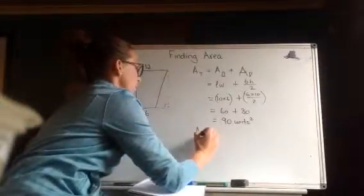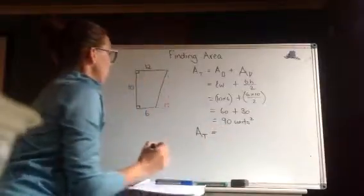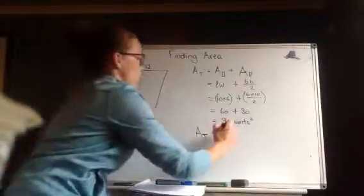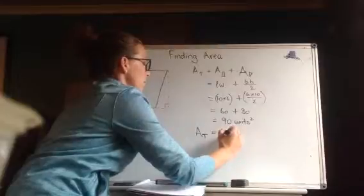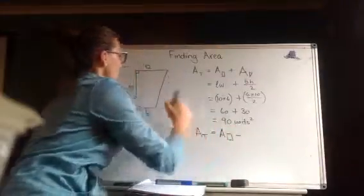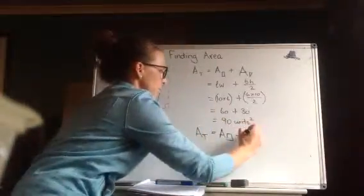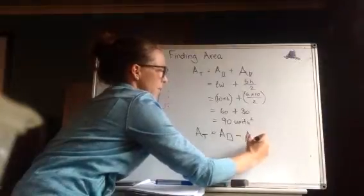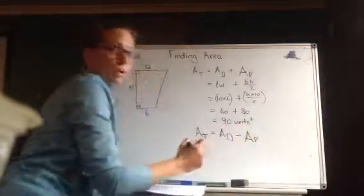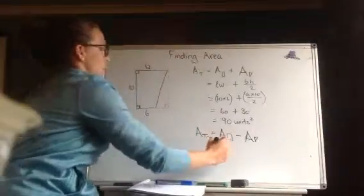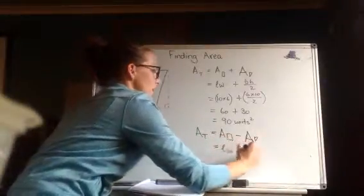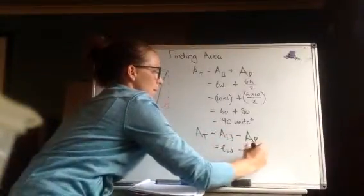area of the, sorry, total area is equal to area of a big rectangle take away area of the little triangle. So I did it again. Can't get my pictures right today. Okay, length times width, take base height on two.